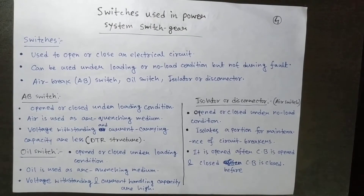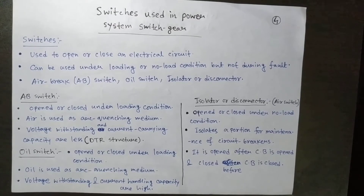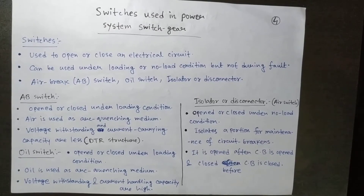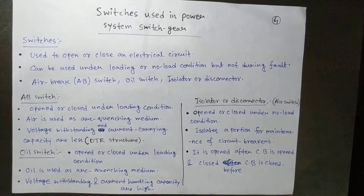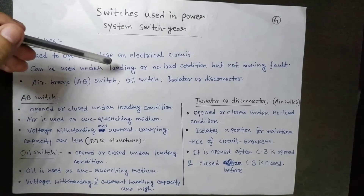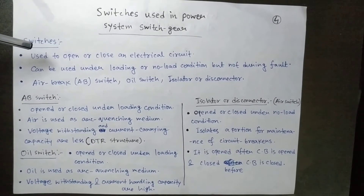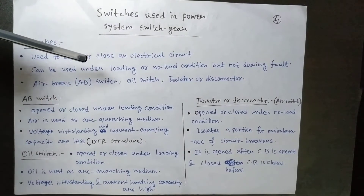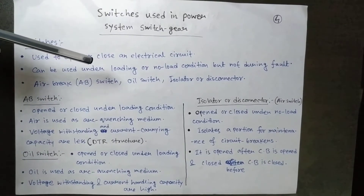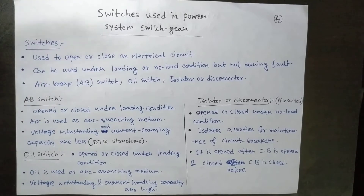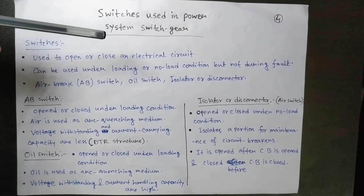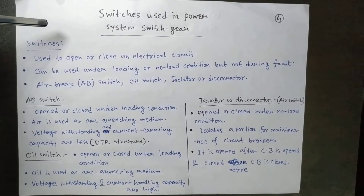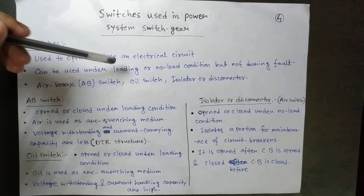Switches are one of the major parts of switchgear. There are different kinds of switches used in power systems for switching purposes. A switch is used to open or close an electrical circuit. It can be used under loading or no-load conditions, but not during a fault. For fault conditions, circuit breakers are used — switches are only for normal operating cases.